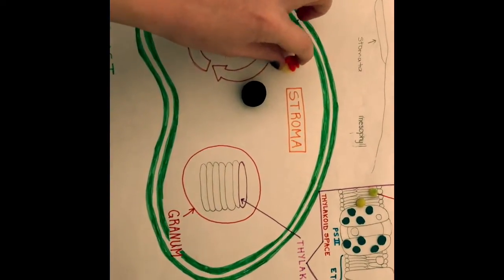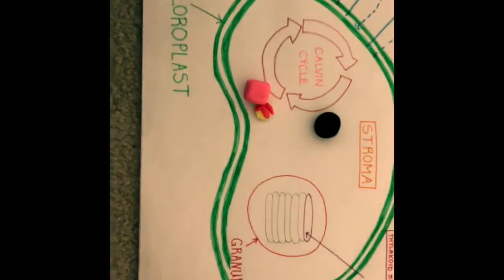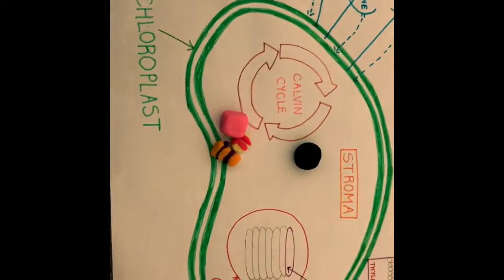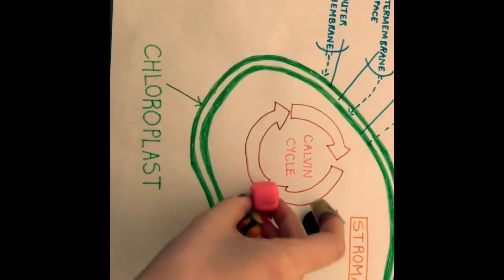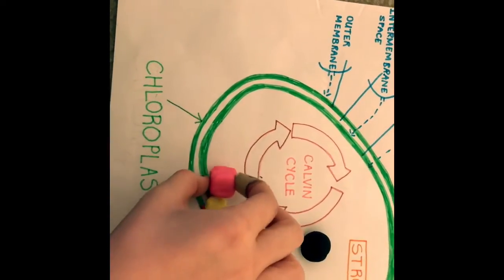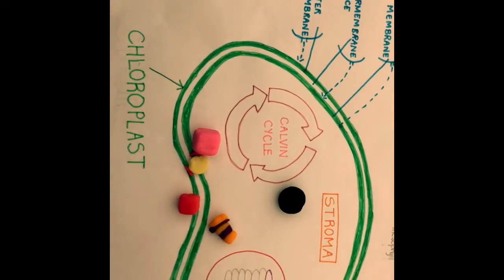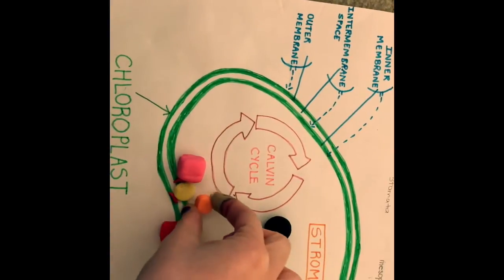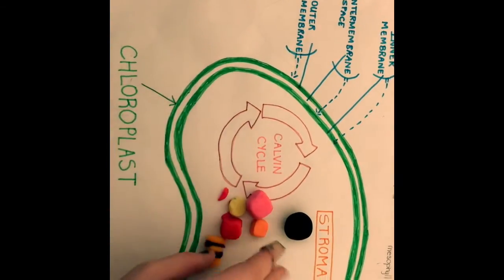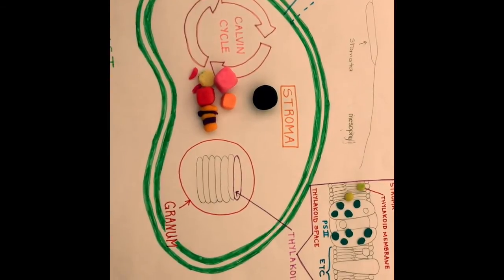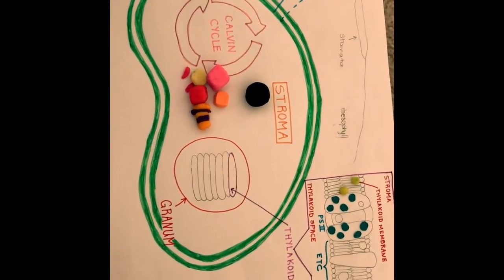In the second stage, ATP and NADPH are used to reduce a 3-carbon molecule into glucose. Then ATP is converted into ADP and NADPH is converted into NADP+. These are produced in the second stage, also known as reduction. The second stage of the Calvin cycle is called reduction because it involves the gaining of an electron.